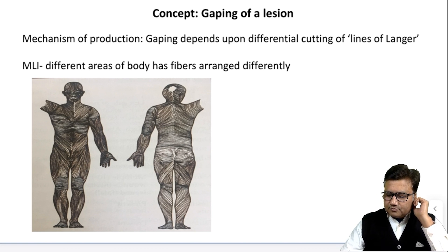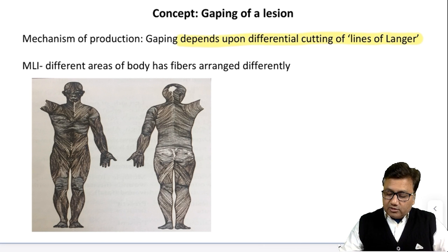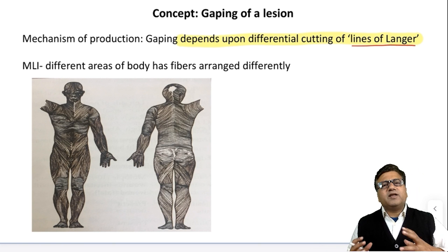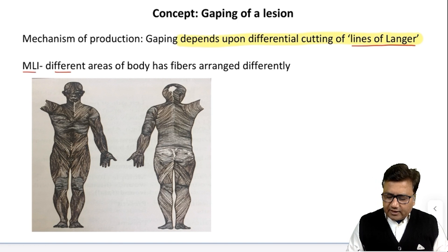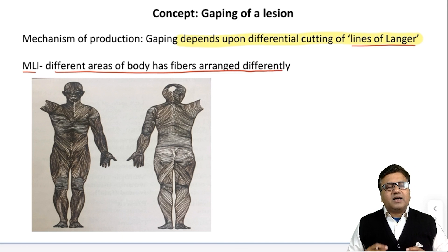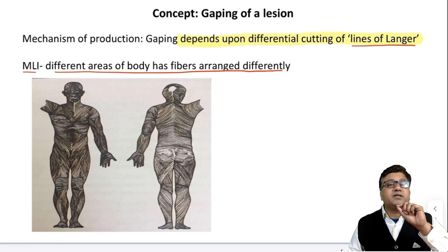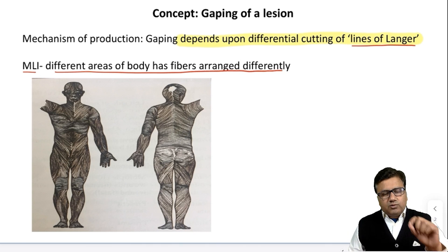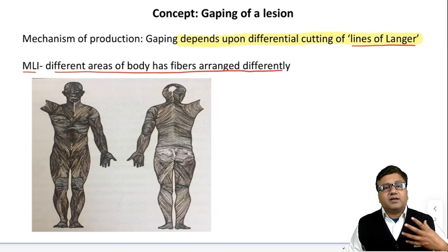Gaping depends upon differential cutting of Lines of Langer. Lines of Langer have medical and legal importance. Different areas of the body have different fibers arranged differently in them. If you look at the photograph, what do we see? Fibers in different areas of the body are arranged differently.